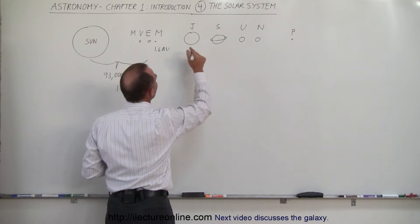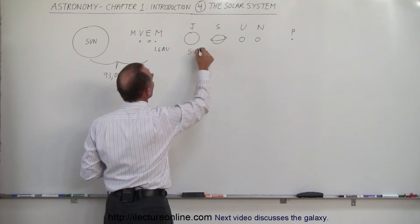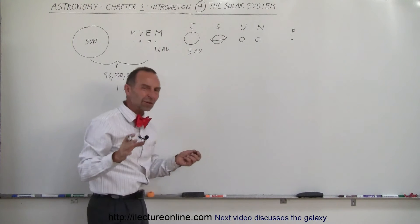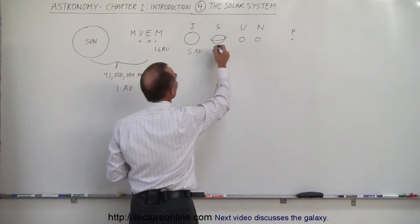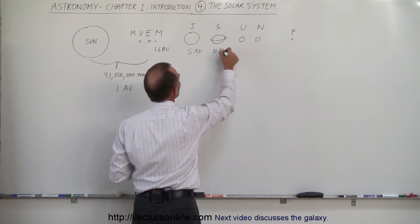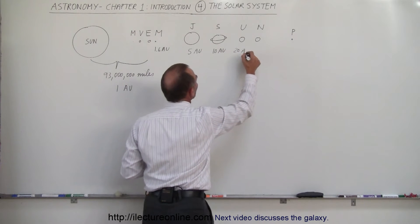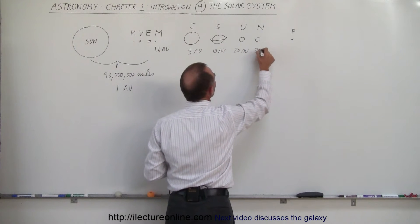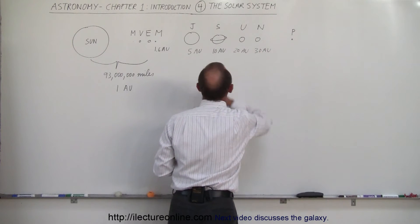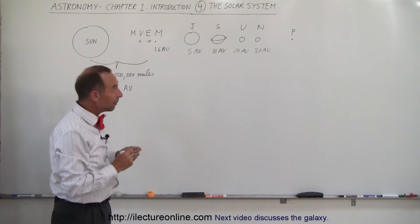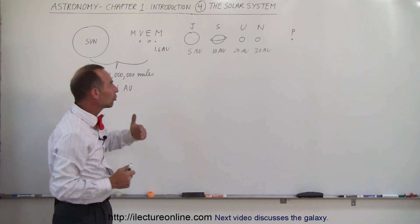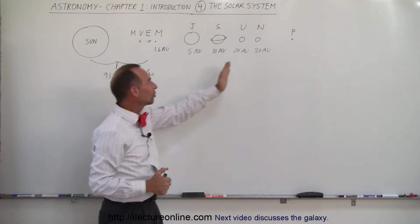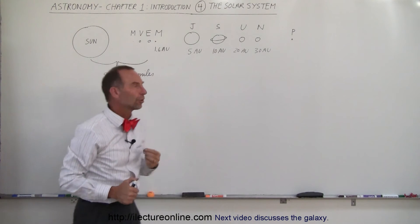Jupiter is about 5 astronomical units, a little bit more than that, but rounding it off to 5 is good. Saturn is about 10 astronomical units. Uranus is about 20 astronomical units. And Neptune is about 30 astronomical units away from the Sun. So imagine Neptune being the farthest planet in our solar system is 30 times as far away from the Sun as the Earth is.